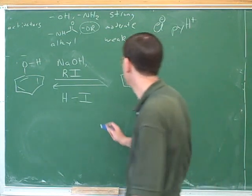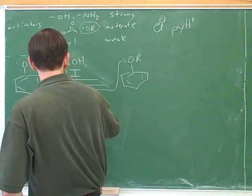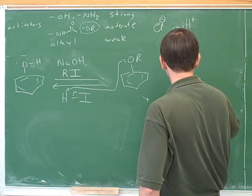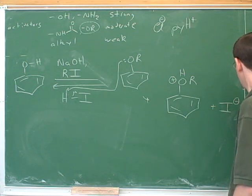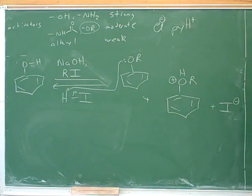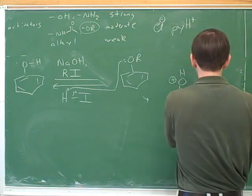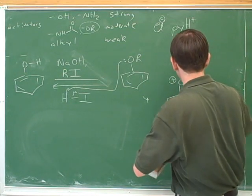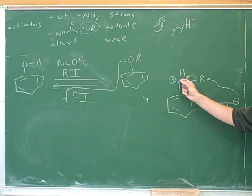It would protonate the OR. We know that strong acids like to protonate things. Now, how would these two things react? The I minus would attack the R. Good. What was the purpose of that first protonation step then? To make the R a better electrophile. And? A better leaving group. To make the oxygen a better leaving group.